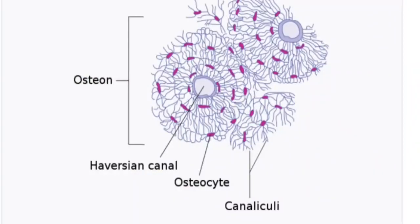Osteoblasts are bone cells that are responsible for bone formation. Osteocytes are mature bone cells and are the main cells in bony connective tissue. These cells cannot divide. They maintain normal bone structure by recycling the mineral salts in the bony matrix.